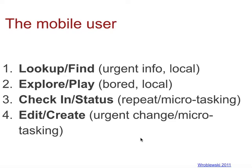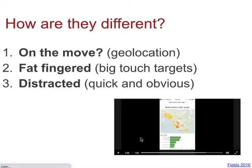They might be editing something or making an urgent change on the move. Considering these user behaviors can be quite useful in thinking about the user experience and not just the technical design. Likewise, they're using their fingers to navigate rather than a mouse. They may be distracted, so your design might need to be more obvious and quicker. And you can take advantage of the fact that they're on a mobile phone — tapping into geolocation functionality or sensors around movement.